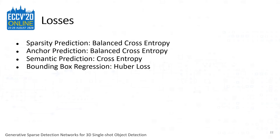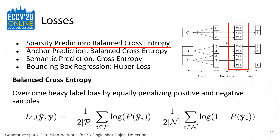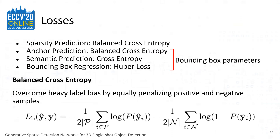We train our proposed model end-to-end with the following losses. First, we train sparsity prediction to decide which voxels to prune using balanced cross-entropy loss, a simple modification of cross-entropy loss that overcomes heavy label bias by equally penalizing positive and negative samples. This is especially important since there is a heavy bias in labels toward pruning most of the generated coordinates that are not the center of the instance. Then, similar to previous works in object detection, we train bounding box parameters including anchor classification, semantic classification, and bounding box refinement.